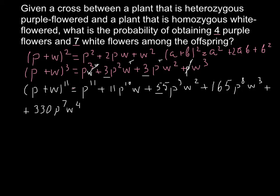We stop at this point because we just need this term to calculate our probability. P stands for purple and W stands for white — and as you can see, this term has P raised to 7 and W raised to 4, which corresponds to 7 purple flowers and 4 white flowers.